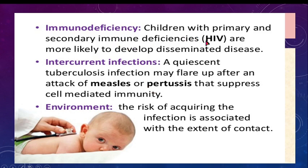Children with HIV are also immunocompromised and are likely to get tuberculosis. Tuberculosis is the most common opportunistic infection in HIV. Sometimes patients come with a history of tuberculosis and then discover they are HIV positive. The most common opportunistic infection occurring in HIV is tuberculosis.